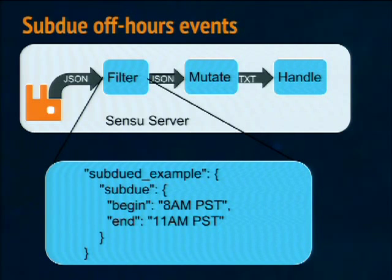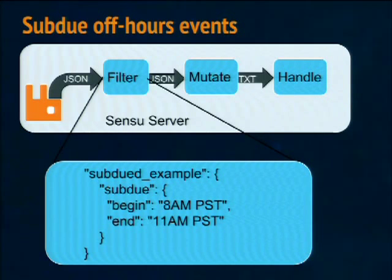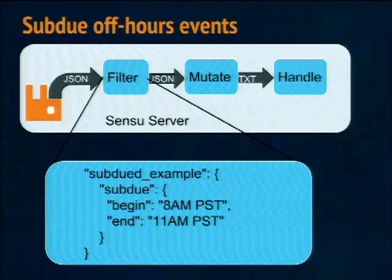Some other use cases: I want to know about this check during the day, but it really should not wake me up or annoy me at dinner. There's a built-in subdue functionality, which is a filter in this workflow that says: if the current time is outside these bounds, just drop it on the floor.